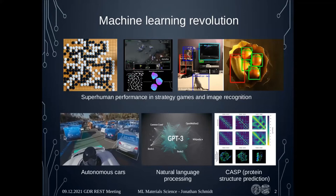Then we have applications in science, and in at least one field we also had a revolution already — in protein structure folding or prediction. There we have the CASP competition every two years, and the last four years this was completely dominated by machine learning models, the AlphaFold models. Now part of the problem might be considered solved — only a small part, but there's been some amazing revolutionary progress.